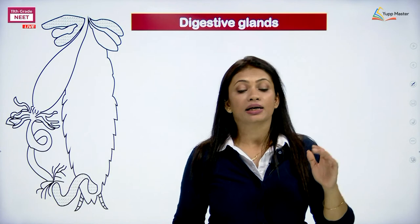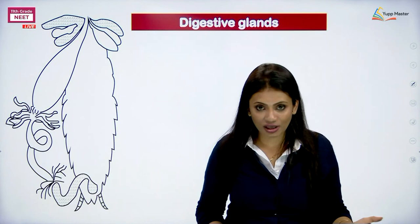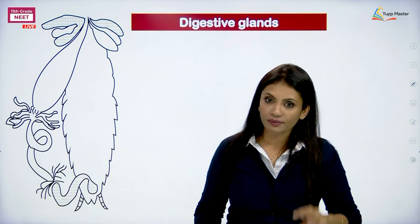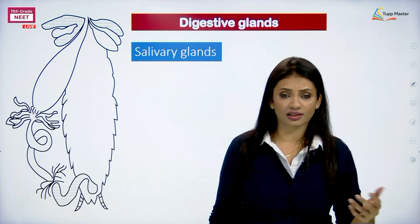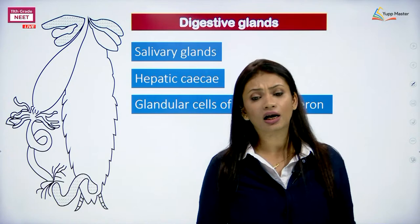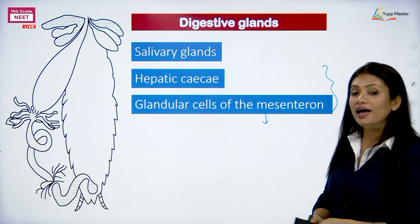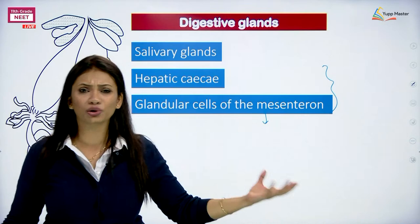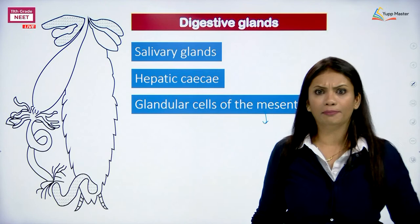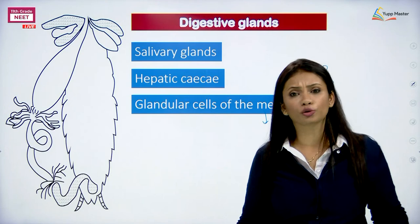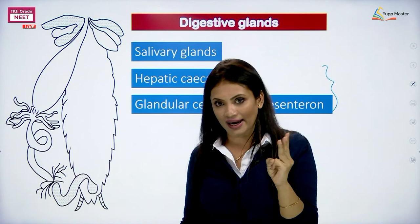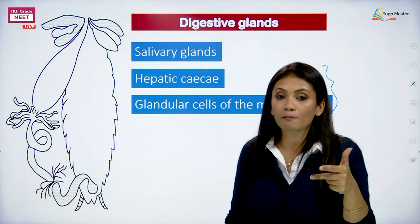The digestive glands of the cockroach are three in number. First, the salivary glands. Second, the hepatic caeca. Third, the glandular cells of the mesenteron. The hepatic caeca and the glandular cells of the mesenteron secrete enzymes responsible for breaking down food materials — similar to how proteases, lipases, amylases and sucrases function in our body.